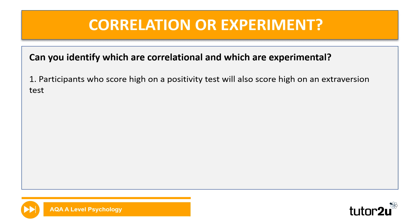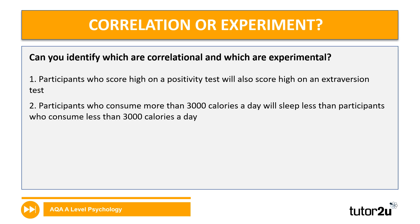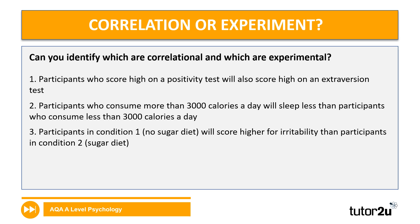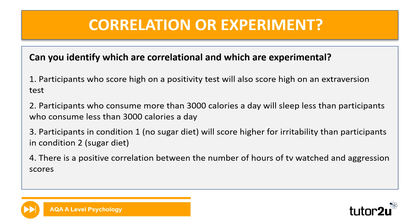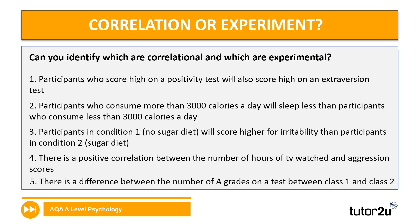The answers: One — 'Participants who score high on a positivity test will also score high on an extraversion test' — that's a correlational hypothesis. Two — 'Participants who consume more than 3,000 calories a day will sleep less than participants who consume less than 3,000 calories a day' — we're specifying a difference, so that's experimental. Three — 'Participants in condition one (no sugar diet) will score higher for irritability than participants in condition two (sugar diet)' — again, specifying a difference between two groups, so experimental. Four — 'There is a positive correlation between the number of hours of TV watched and aggression scores' — the clue is in the word 'correlation', so that's correlational. Five — 'There is a difference between the number of A grades on a test between class one and class two' — that's experimental.